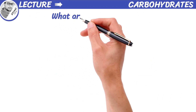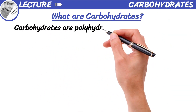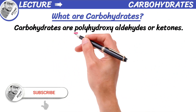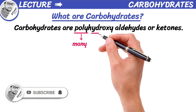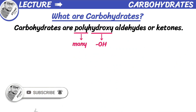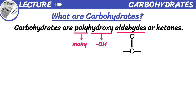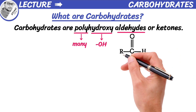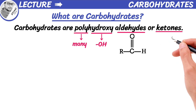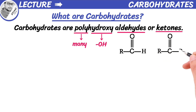Carbohydrates are polyhydroxy aldehydes or ketones. Poly means many and hydroxy means hydroxyl group, so polyhydroxy means having many hydroxyl groups. Aldehydes are a type of organic compound that contain a carbonyl group located at the end of the carbon chain. Ketones are organic compounds that contain a carbonyl group bonded to two other carbon atoms.